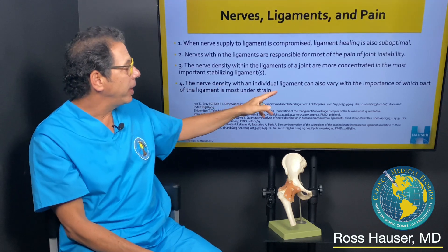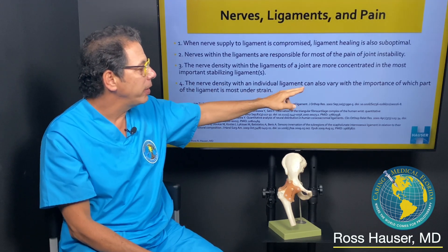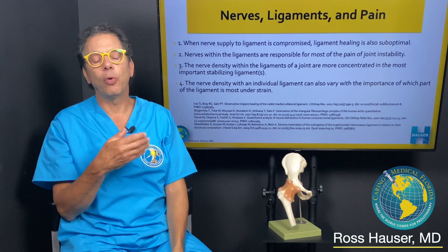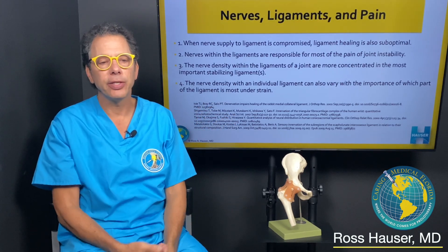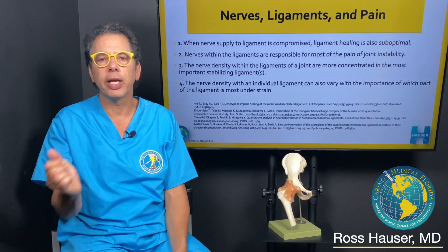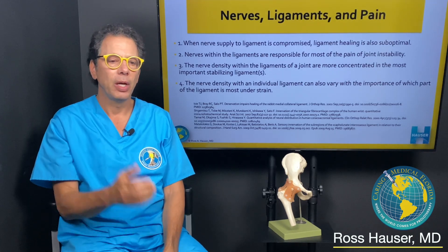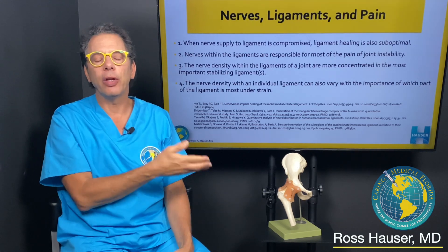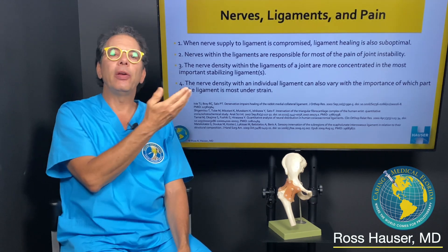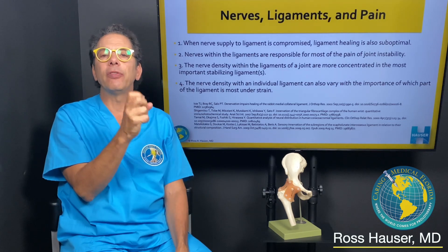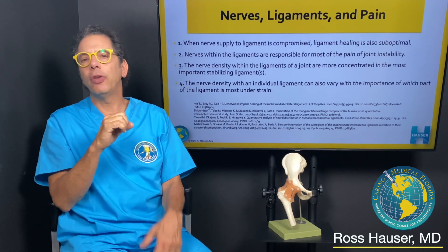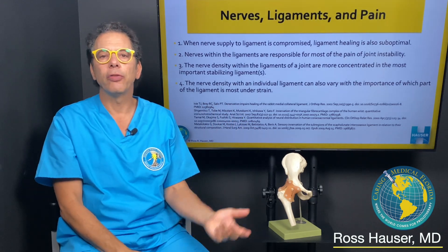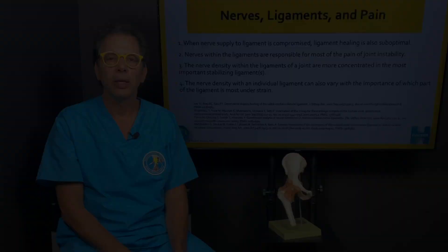The nerve density within an individual ligament can also vary with the importance of which part of the ligament is under the most strain. Normally that's where the ligament attaches to the bone, but in certain situations it can be in the middle of the ligament. Prolotherapy is so effective at resolving chronic pain because it tightens the ligaments, and when the ligaments are tight, the nerve endings within them don't fire anymore — and then the pain goes away.